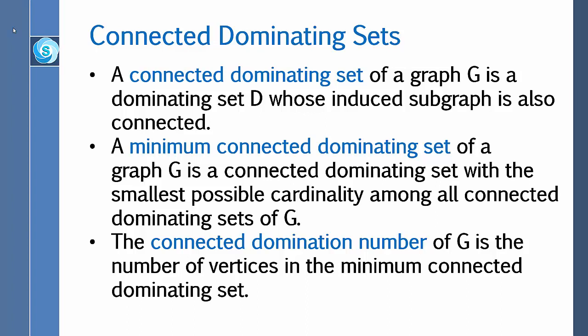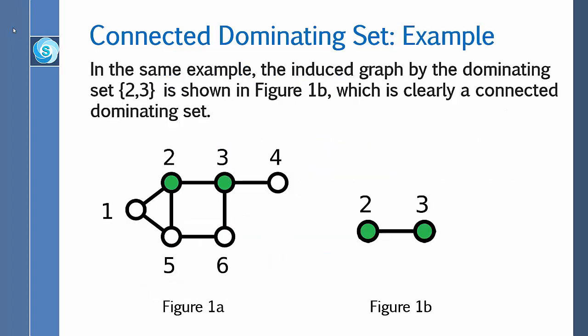A minimum connected dominating set of a graph G is a connected dominating set with the smallest possible cardinality among all connected dominating sets of G. The connected domination number of G is the number of vertices in the minimum connected dominating set. The subgraph induced by the dominating set {2, 3}, shown in figure 1, is clearly a connected dominating set.